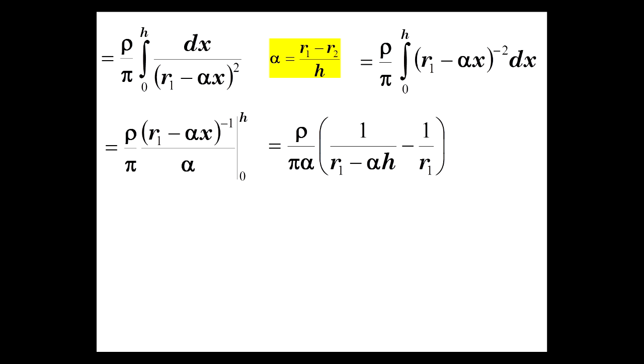And now, to the negative 1, it becomes an inverse. And since we're putting 0 in for x, then we also have minus 1 over r1.